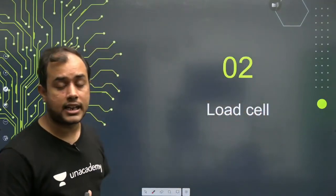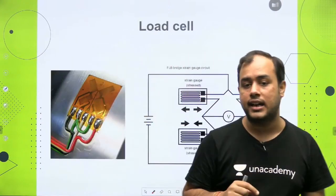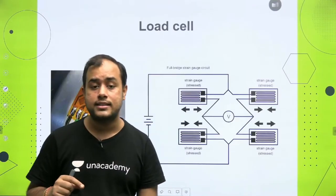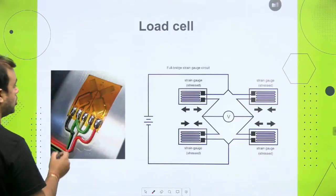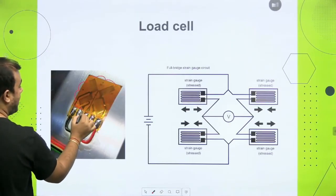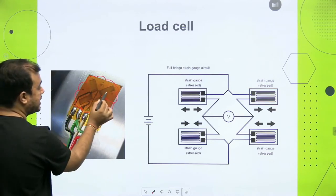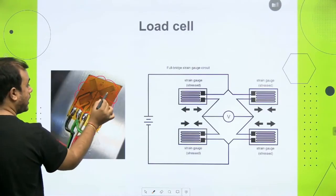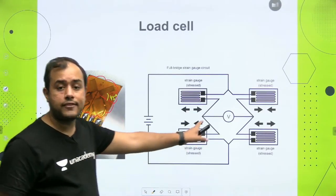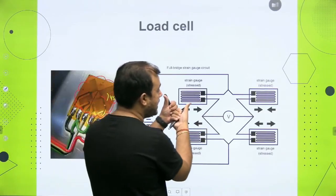Inside the load cell, what you do is place this strain gauge inside a Wheatstone bridge. When you put a strain gauge into a Wheatstone bridge, that assembly is called a load cell. There are four strain gauges, all forming part of a bridge, oriented at 45 degrees to each other. These four strain gauges have been made part of a Wheatstone bridge.